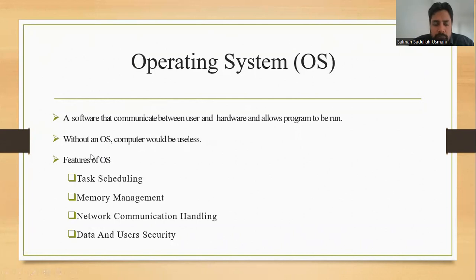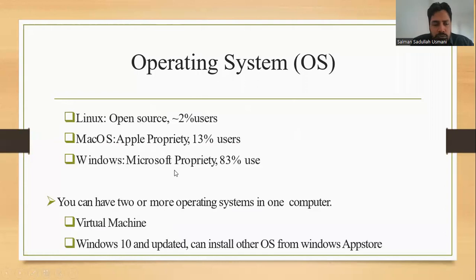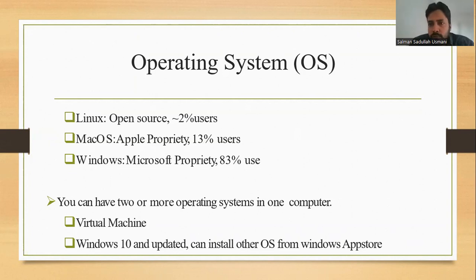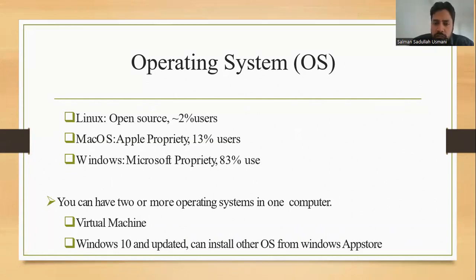A good operating system must have task scheduling, memory management, network communication handling, and data security for users. Operating systems can be divided into three types: Windows, which is a Microsoft property used by around 83% of the world; macOS, which is Apple's property used by around 13%; and Linux, which is purely open source and freely available but unfortunately used by only about 2% of users.